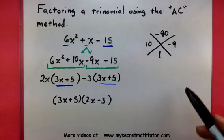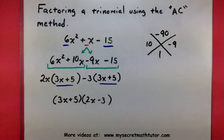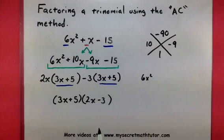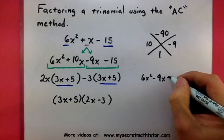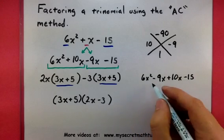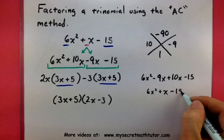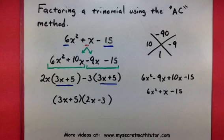It's kind of an interesting process, and you might not be convinced that that is really how it factors. But if you're not convinced, go ahead and multiply this back together. 3x plus 5 times 2x minus 3 — the first terms give us 6x squared, the outside terms give us minus 9x, the inside terms give us plus 10x, and the last terms give us minus 15. Combining, sure enough, it does equal the original. This is really how our trinomial factors. If you'd like to see more videos, please visit MySecretMathTutor.com.